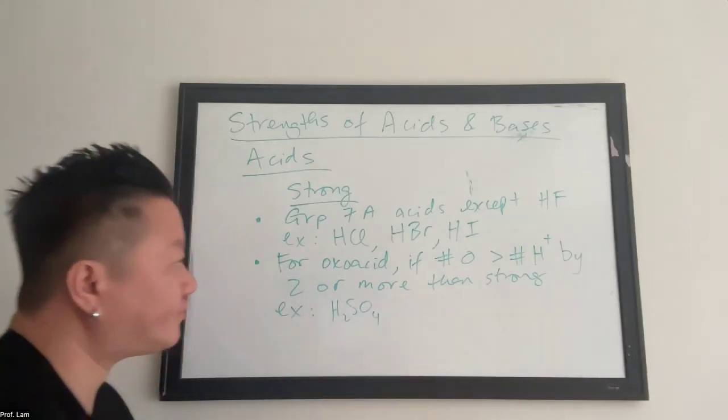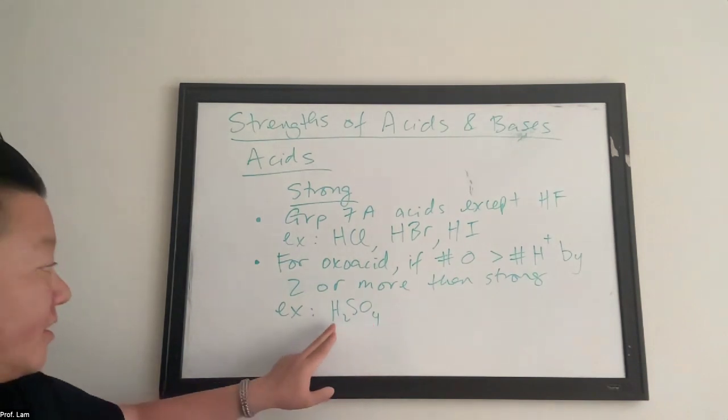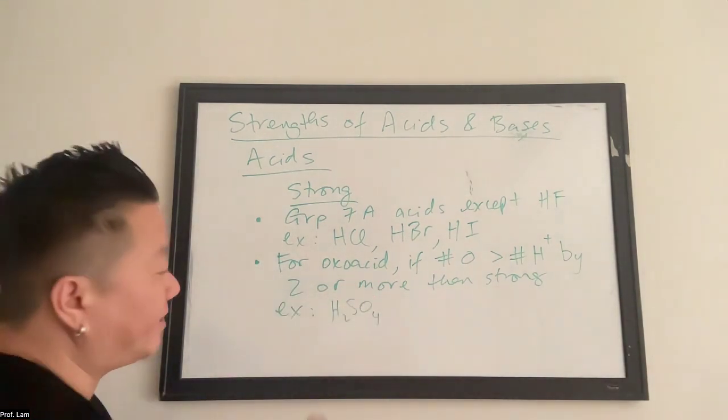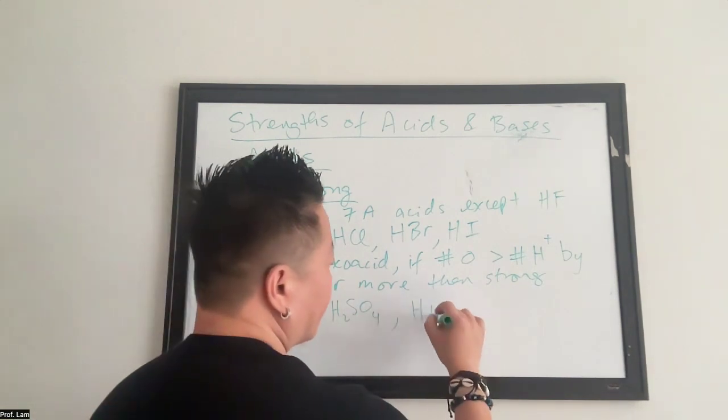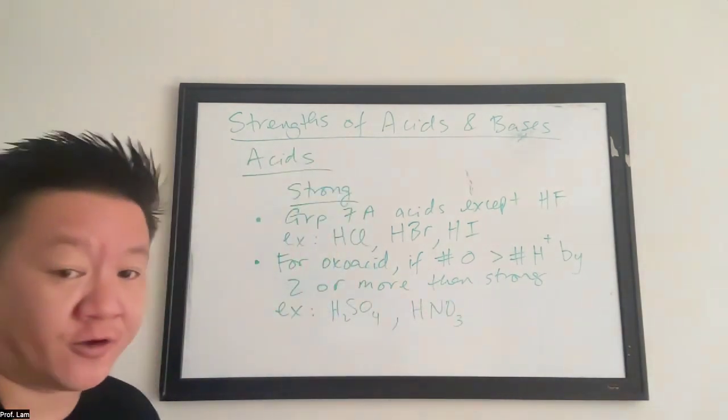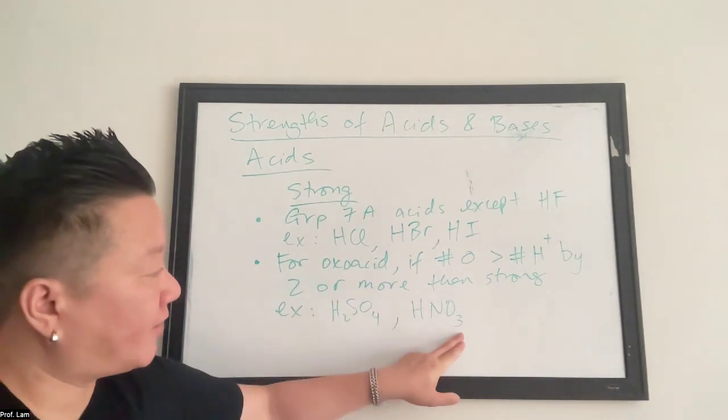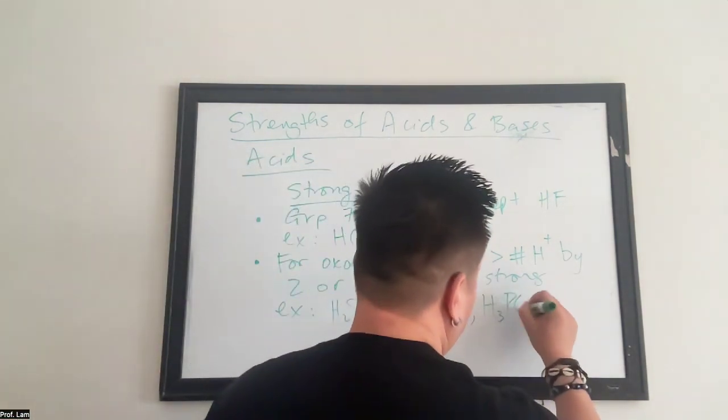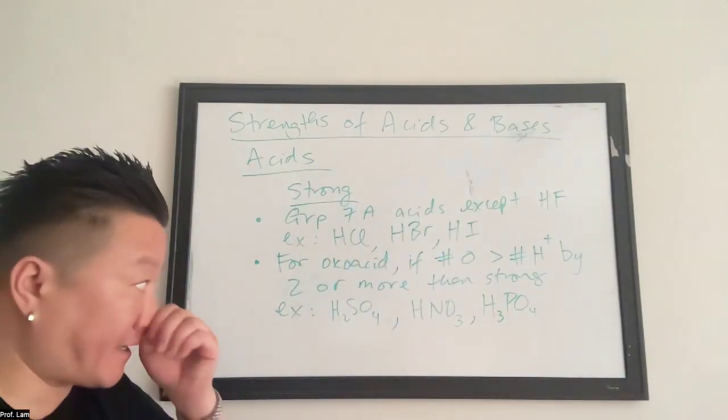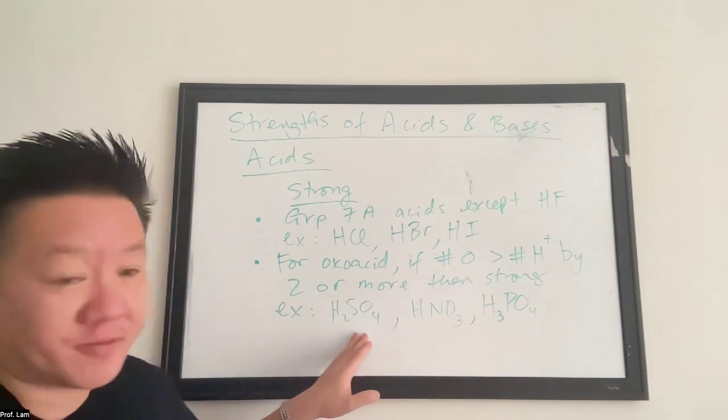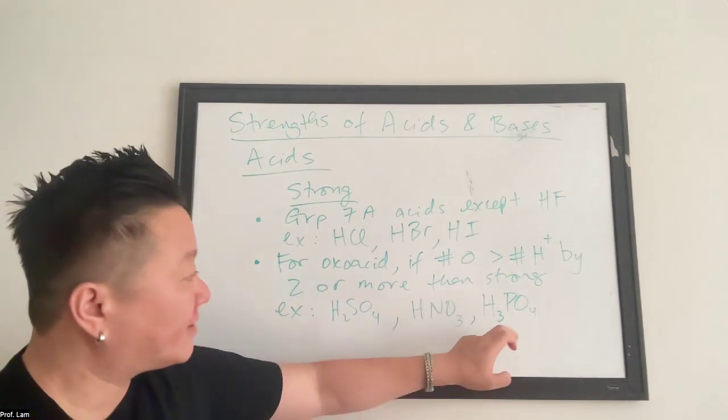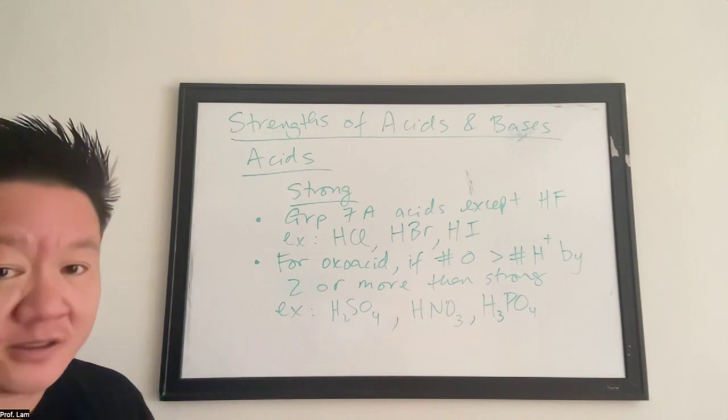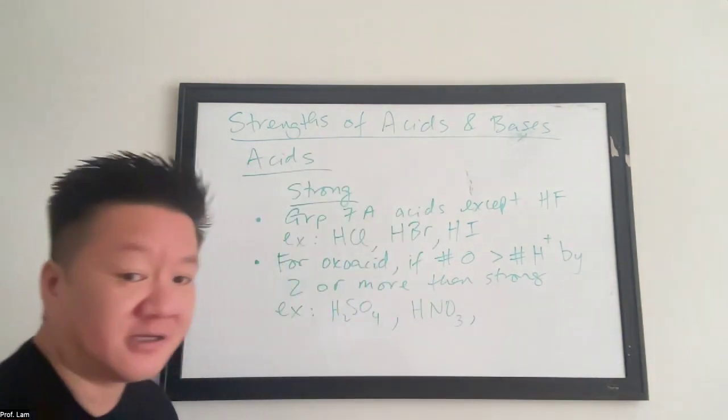So here's an example, H2SO4. Count the number of oxygens, four. Count the number of protons, two. Four minus two is two. So two or more. This is considered strong. How about HNO3? Three minus one is two. So it's strong. How about H3PO4? Notice these are all oxoacids. And remember, those are the ones that come from your polyatomic. So just count the number of oxygen, four minus three. That's one. One is not two or more. So H3PO4 is actually a weak acid. It does not belong on this list.